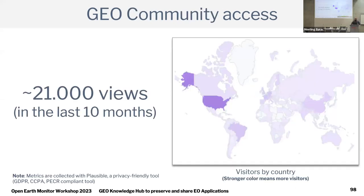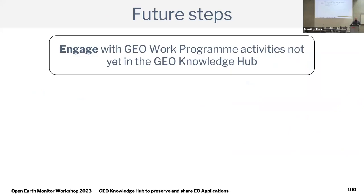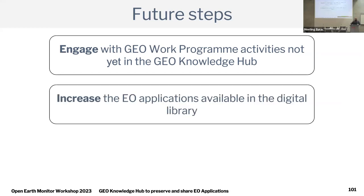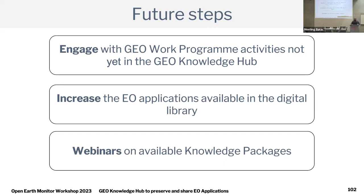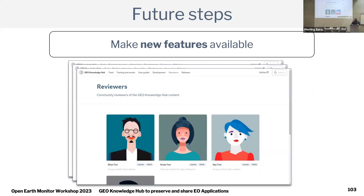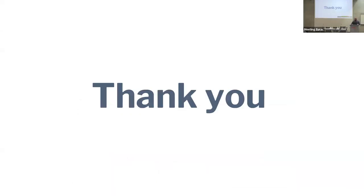We now have 108 knowledge packages with 531 knowledge resources. We started operations last year and are very happy with this result. The community is already accessing it — in the last 10 months we received around 21,000 views from various countries. As future steps, we aim to engage more work program activities, plan webinars on available packages, and continue adding features — for example, we are now implementing a reviewers module to manage and give visibility to people who are revising content in the GeoKnowledgeHub.